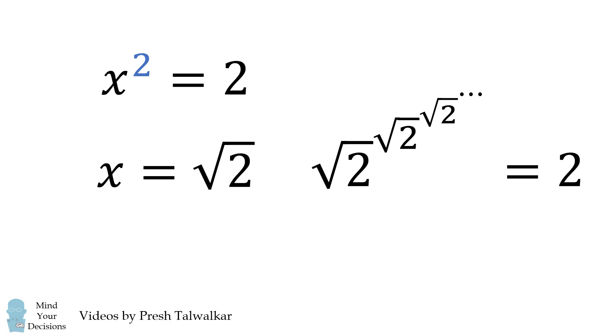And that is correct that square root of 2 to the power of square root of 2 to the power of square root of 2 repeated infinitely many times is equal to 2.